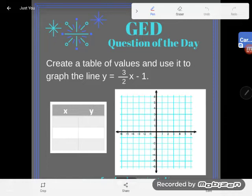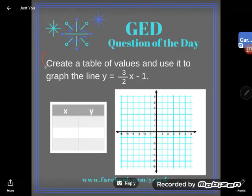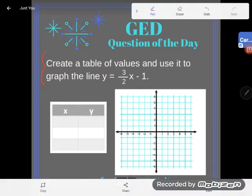The GED sent us adult education teachers a list of problems that students are missing a lot on their GED, and here's one. Even though it might look challenging, it's actually pretty simple. Let's take a look. Directions say create a table of values and use it to graph the line y equals three halves x minus one.